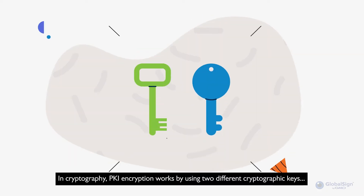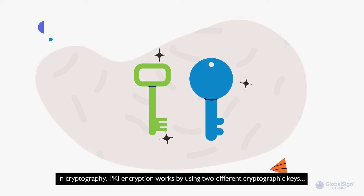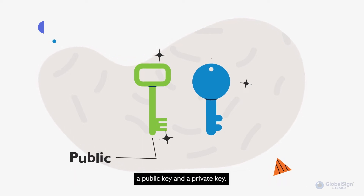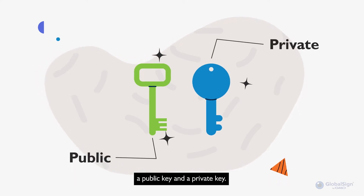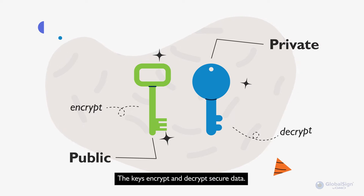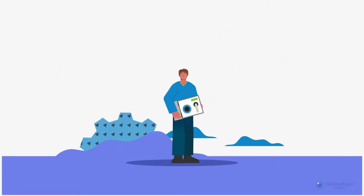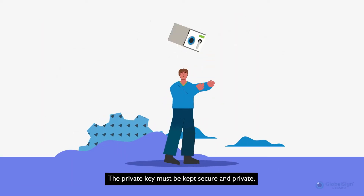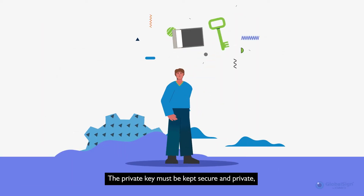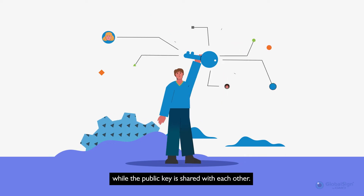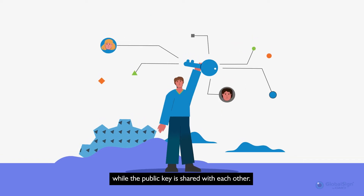In cryptography, PKI encryption works by using two different cryptographic keys: a public key and a private key. These keys encrypt and decrypt secure data. The private key must be kept secure and private, while the public key is shared with others.